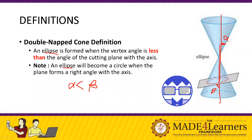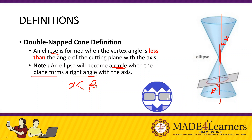Take note that an ellipse will become a circle when the plane forms a right angle with the axis. When beta is 90 degrees, we have a circle. This is why we say that the circle is a special case of an ellipse.